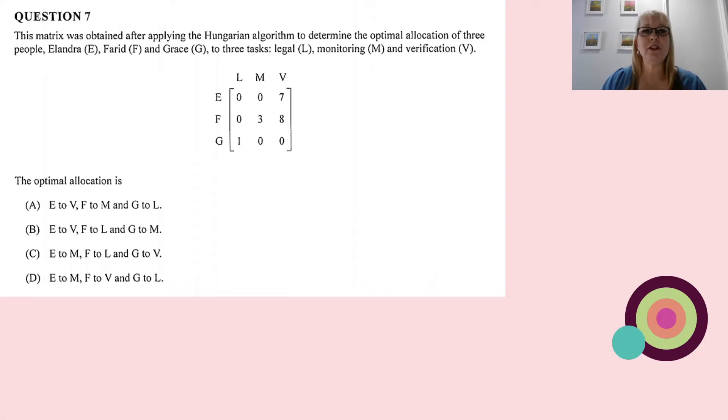Firstly, question seven. It's a multiple choice question. This matrix was obtained after applying the Hungarian algorithm to determine the optimal allocation of three people—Alandra, Farid, and Grace—to three different tasks: legal, monitoring, and verification.